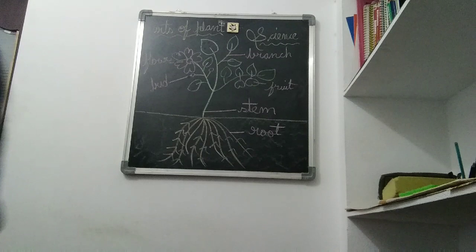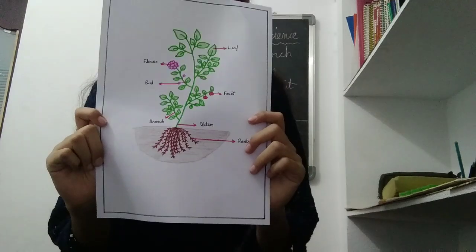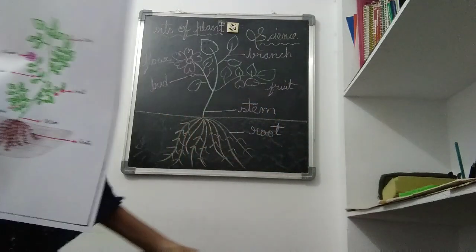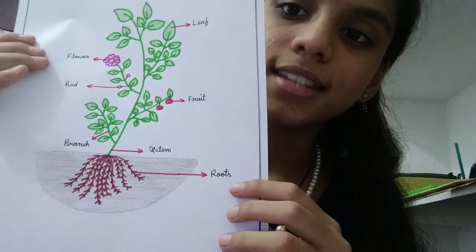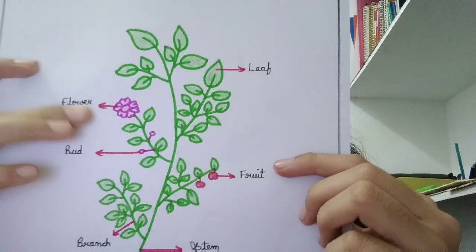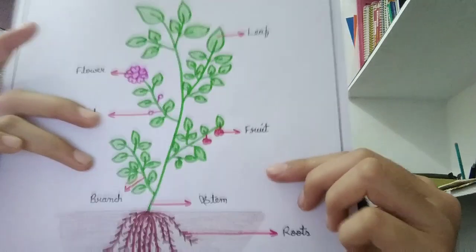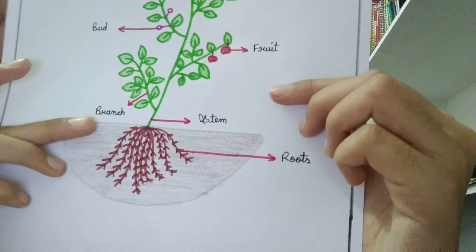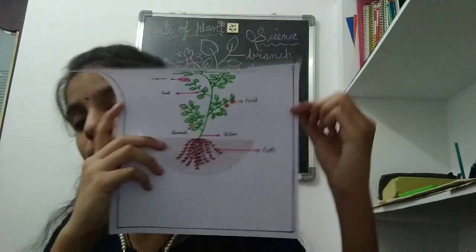I drew this on a paper — I will show you my coloring also. See, this is the plant. I will explain this plant too. See here: this is a leaf, this is a flower, this is a bud, this is a fruit — apple — this is a branch, this is the stem, and these are roots. See, this is my plant.